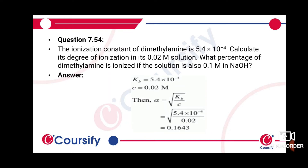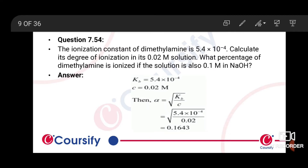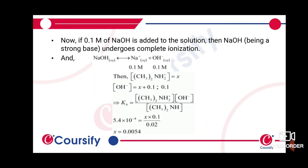If 0.1M NaOH is added to the solution, NaOH being a strong base undergoes complete ionization. It dissociates completely into Na⁺ and OH⁻ ions, giving 0.1M OH⁻ concentration.